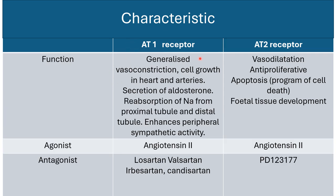Functions of AT1 receptors include generalized vasoconstriction, cell proliferation in the heart and arteries, aldosterone secretion, sodium reabsorption from proximal and distal convoluted tubules, and enhanced peripheral sympathetic activity. AT2 receptor activation leads to vasodilation, antiproliferative action, apoptosis, and fetal tissue development. The agonist for both receptors is angiotensin 2. Antagonists for AT1 receptors include losartan, valsartan, irbesartan, and candesartan. The AT2 receptor antagonist is PD-123177.